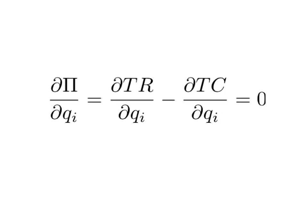Since profit is total revenue minus total cost, the derivative of profit with regards to quantity is just the derivative of total revenue with regards to quantity minus the derivative of total cost with regards to quantity.